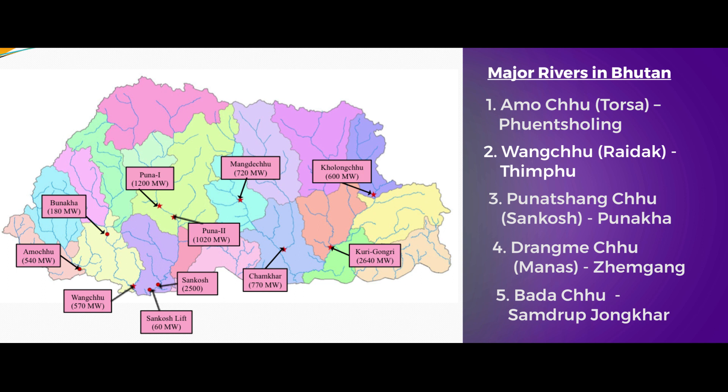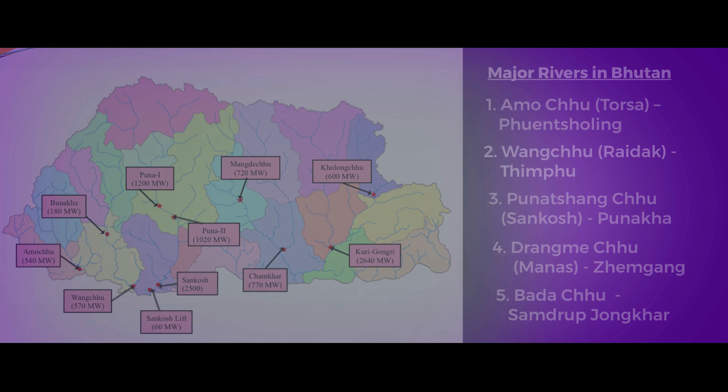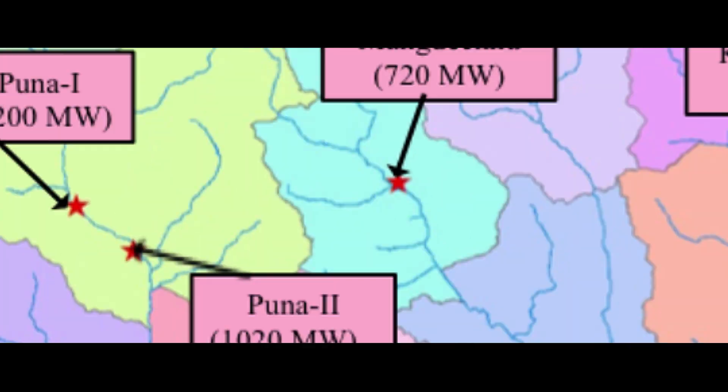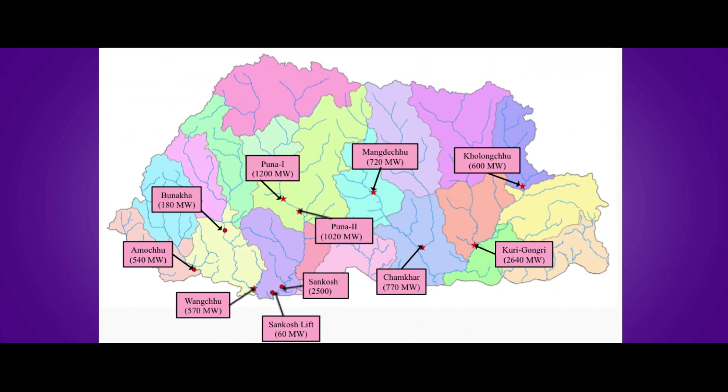Besides these major rivers, we have other rivers where hydropower plants are located. For example, Mangdichu in Tongsa, Chamkarchu in Bantang, Kholongchu in Tashiyangtsi, Khomachu in Linzhi, and Kurichu in Mongar. These are very precious rivers for Bhutan's hydroelectricity.